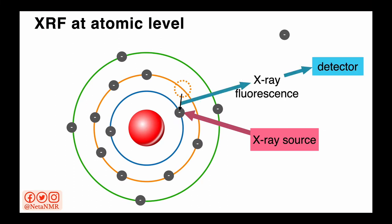When the outer shell electron moves to the inner shell, an energy is released in the form of X-ray fluorescence. This energy is then recorded by the detector. And by analyzing this energy, we can find out which elements are present in the sample.